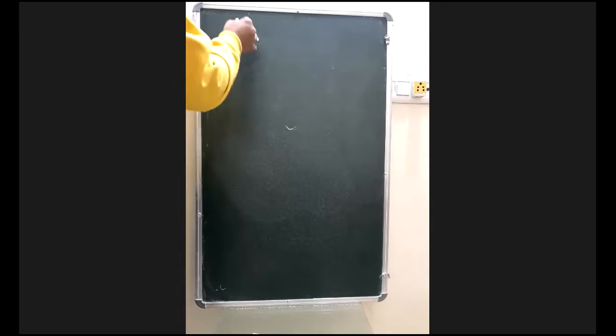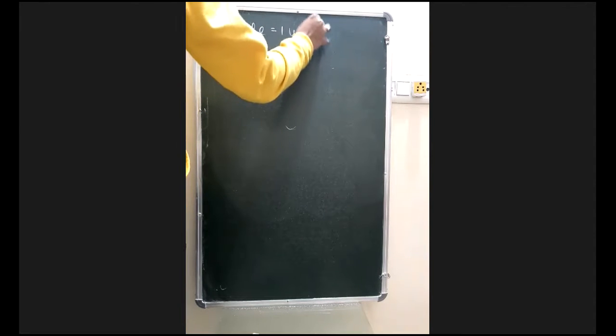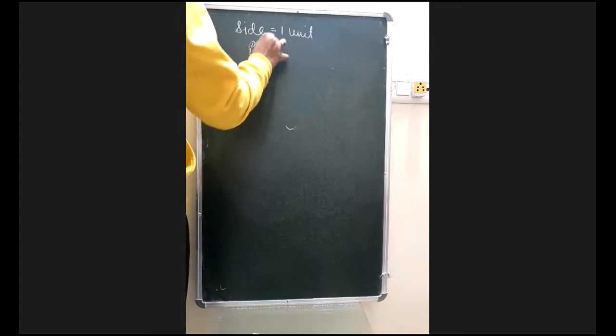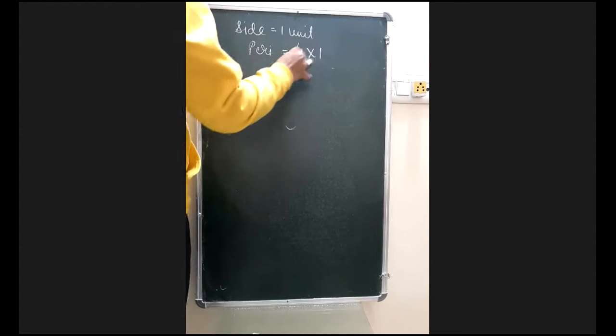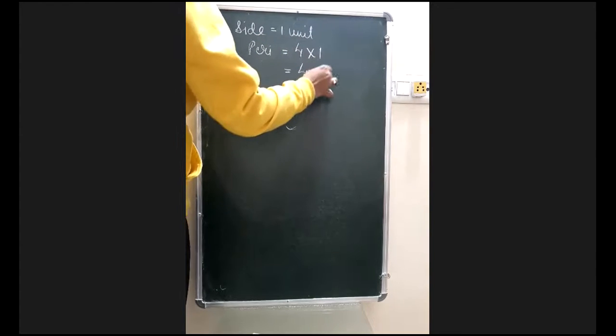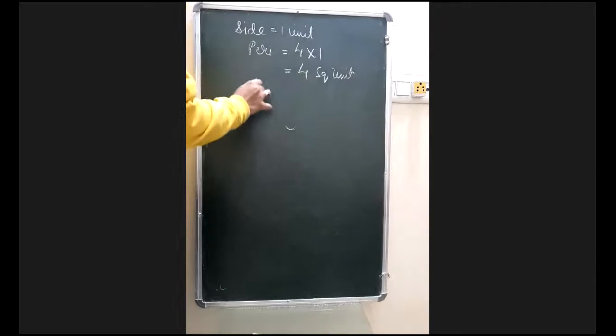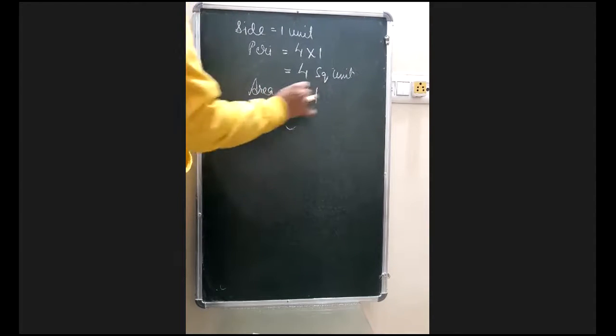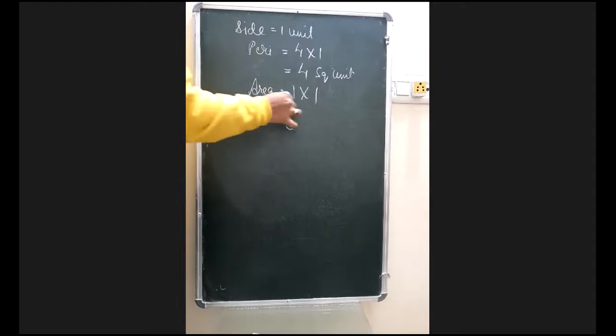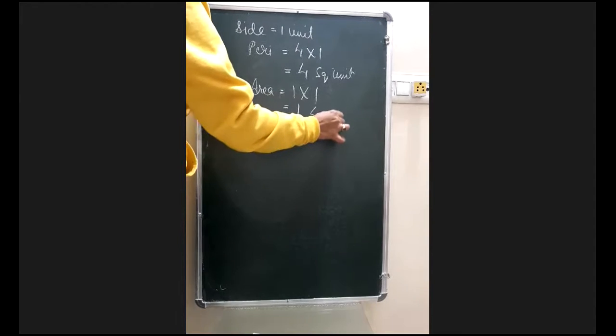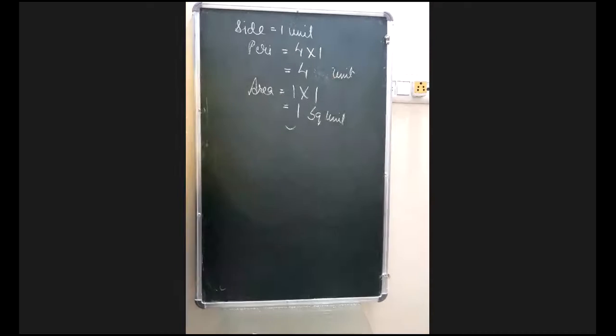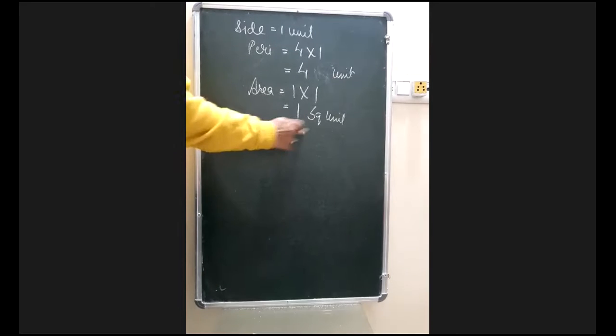If each side of a square is one unit, the perimeter is 4 × 1 = 4 units, and the area is 1 × 1 = 1 square unit. So perimeter is 4 units and area is 1 square unit.